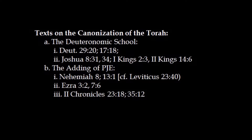The P, J, and E were probably a separate collection that was then added to D. The earliest thing we can point to that shows the canonization of the Torah is found in the book of Nehemiah, chapter 8.